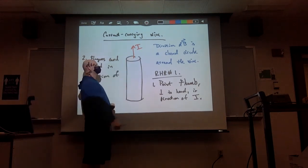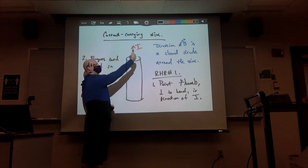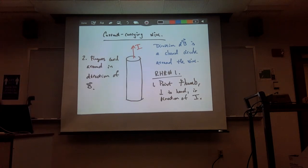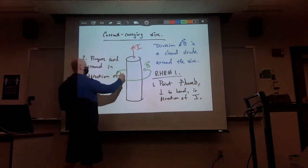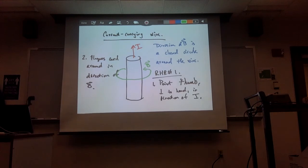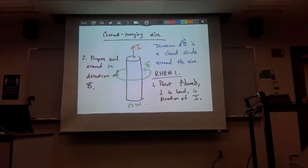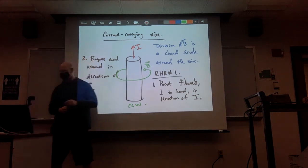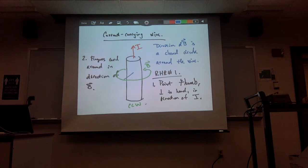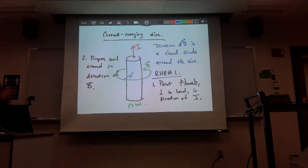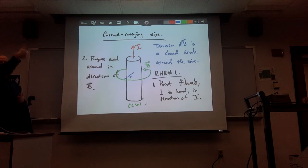Step two: fingers curl around in the direction of the magnetic field. So if the current is running upward, I put my thumb in the direction of the current, and my fingers curl around in the direction of the magnetic field — in this case, the counterclockwise direction. The magnetic field forms a circle at constant radius R around the wire, with direction dictated by the right hand. Thumb in direction of current; fingers go around in direction of B.